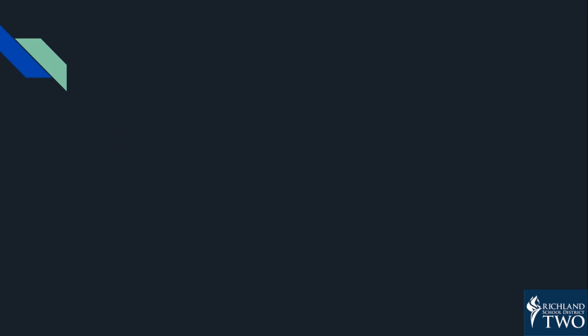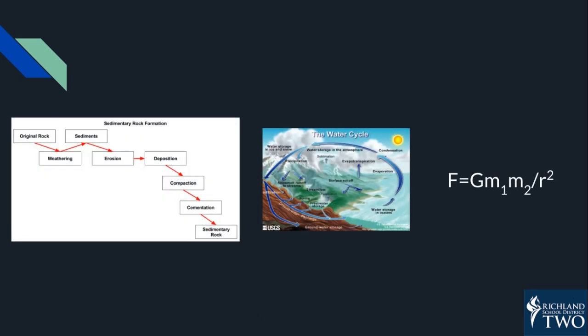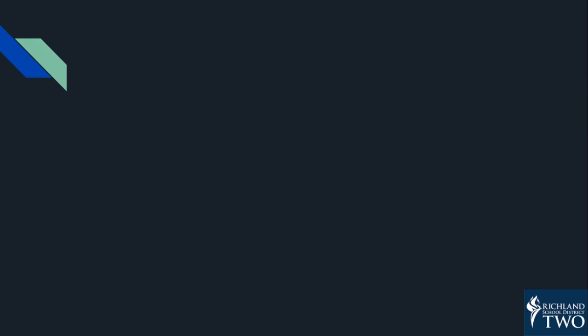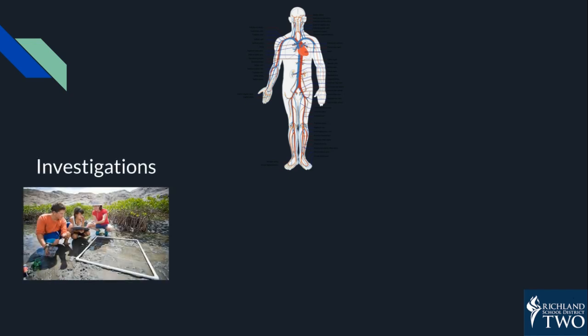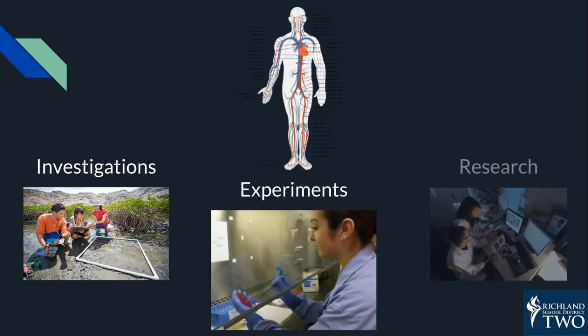So, models are a very important part of science and a very important tool that scientists and engineers use. But where do all these models come from? Since models are used by scientists to communicate about something that happens, first the scientist needs to understand what is happening. This means investigations and experiments and research.